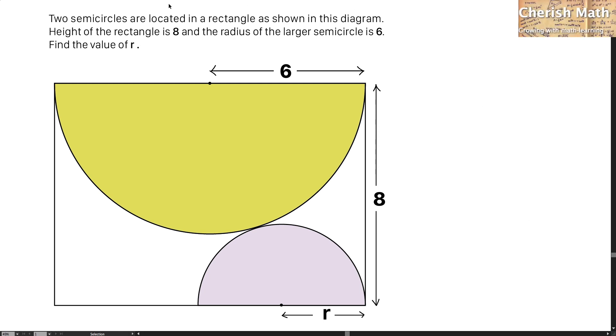Hi from Cherish Math. This is the question. Two semicircles are located in a rectangle as shown in this diagram. Height of the rectangle is 8 and the radius of the larger semicircle is 6. Find the value of r.